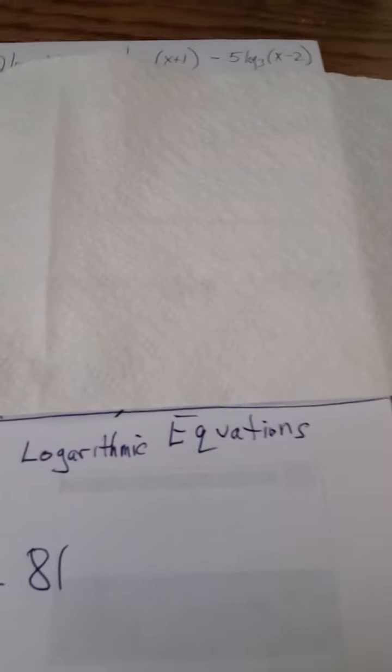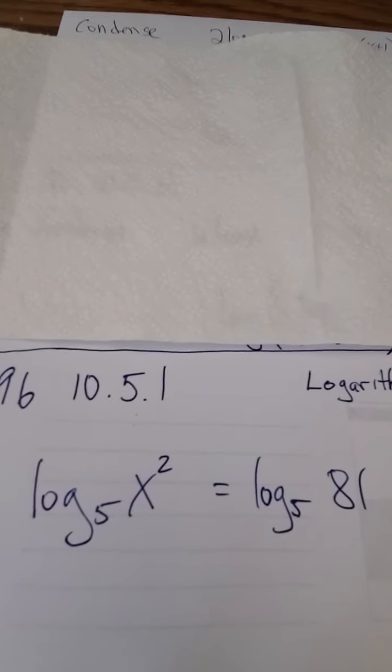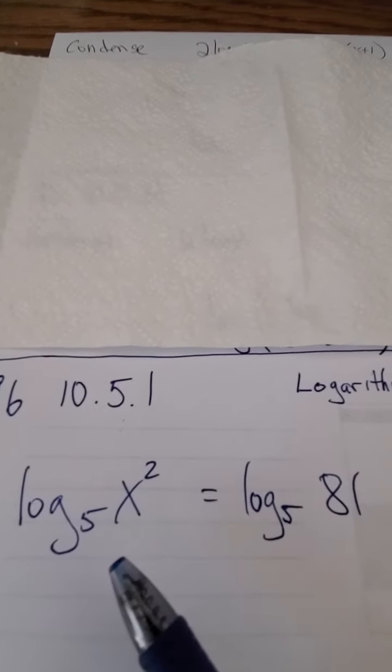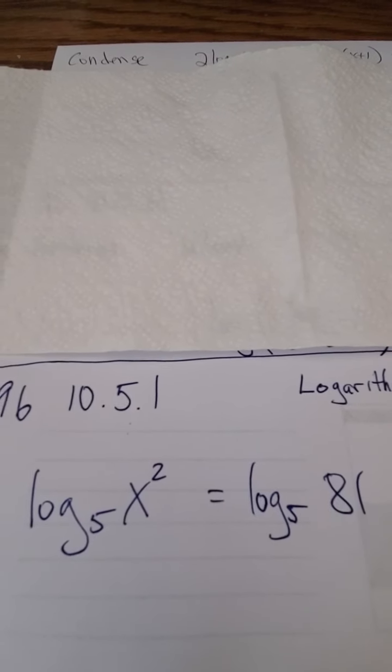In this section we do something called logarithmic equations, so that's an equation that has logarithms in it. Here's an example: the log of x squared base 5 is equal to the log of 81 base 5.